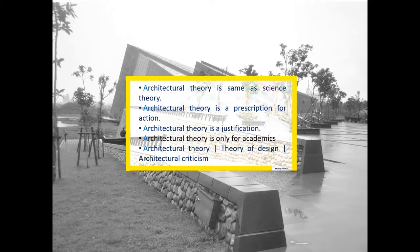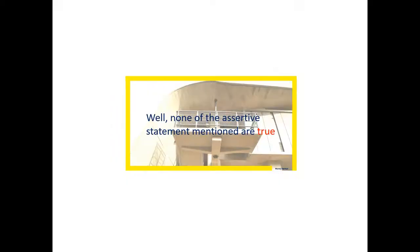Let's talk about myths and misconceptions related to architectural theory first. Architectural theory is same as science theory. Architectural theory is a prescription for action. Architectural theory is a justification. Architectural theory is only for academics. Architectural theory, theory of design and architectural criticism, they are all the same. Well, none of the assertive statements mentioned above are true.